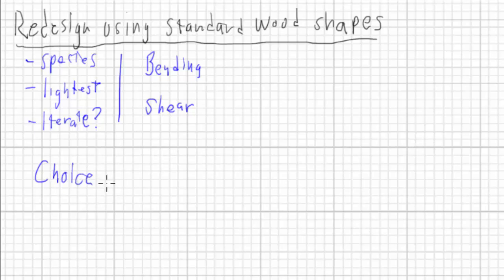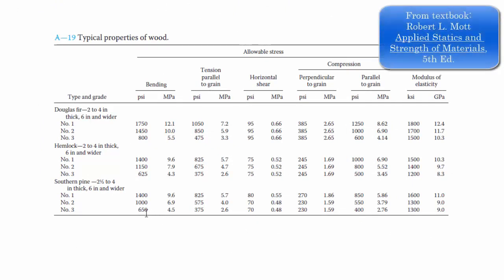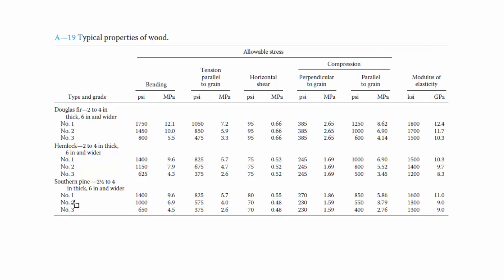My choice here is number two southern pine. In practice, finding the allowable bending and shear stresses for a particular species and grade of wood is actually quite complicated. It depends on many things, including the amount of water in the specimen, the conditions it's going to be under, and many other issues. Using the Mott textbook, it simplifies things.